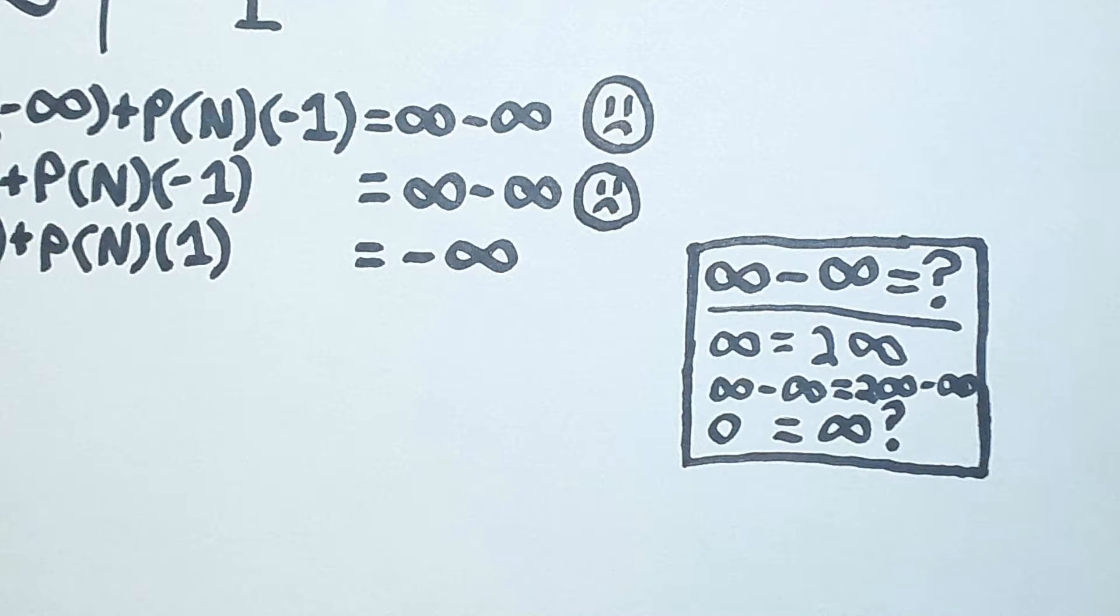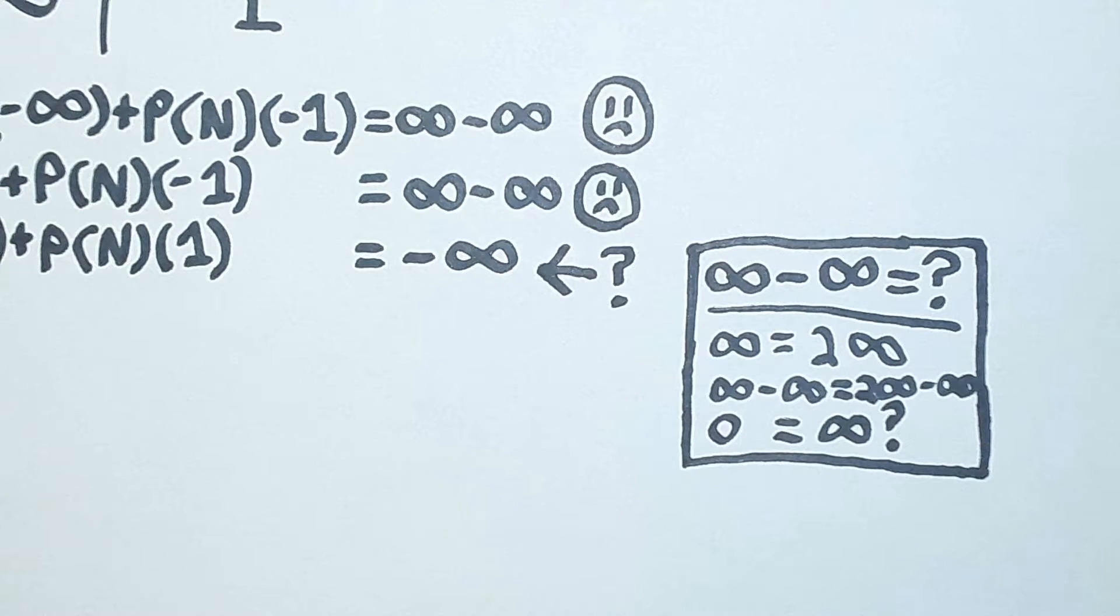Now, what a theist might want to do at this point is say, fine, Pascal's wager doesn't tell you which god you should wager on, but it tells you at the very least you should wager on some god. The expected utility of atheism is negative infinity for crying out loud.